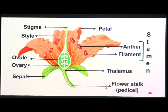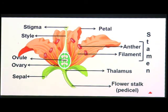Let us go through the flower parts once more. The flower stalk is the pedicel. The part attached to the ovary is the thalamus. The filaments support the anthers. The petals surround the stigma, which sits atop the style. Below is the ovule inside the ovary, with sepals at the outermost part.